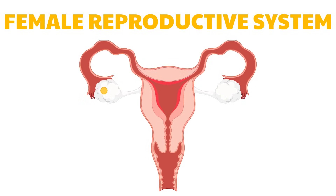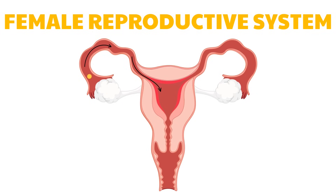A woman's ovaries contain follicles that nurture eggs and produce sex hormones. The pair of ovaries, lying on the right and left depressions of the upper pelvic cavity, produces the mature egg cell. This mature egg cell is swept by the tiny finger-like projections of the oviducts or fallopian tubes. The egg moves along this tube with the help of tiny hair or cilia that line the fallopian tubes. These tubes extend until the uterus. The uterus, an inverted pear-shaped muscular organ, is where the embryo attaches, specifically on its inner wall, the endometrium.